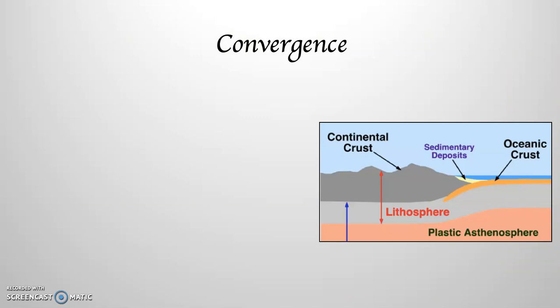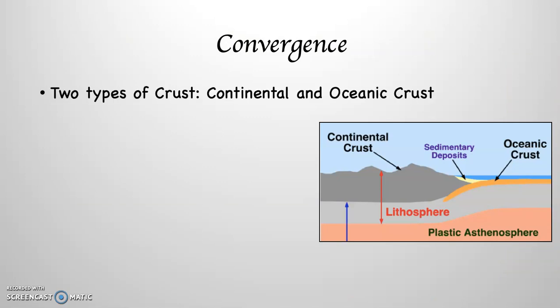Convergence is the second movement. Now, you have to understand that there are two types of crust: continental crust and oceanic crust. The continental crust is the lighter, least dense part of the crust, and is found mostly where the continents are. The oceanic crust is a heavier, denser crust, found overwhelmingly where the oceans are. And there are three types of convergent movement: continental-oceanic convergence, continental-continental convergence, and oceanic-oceanic convergence.